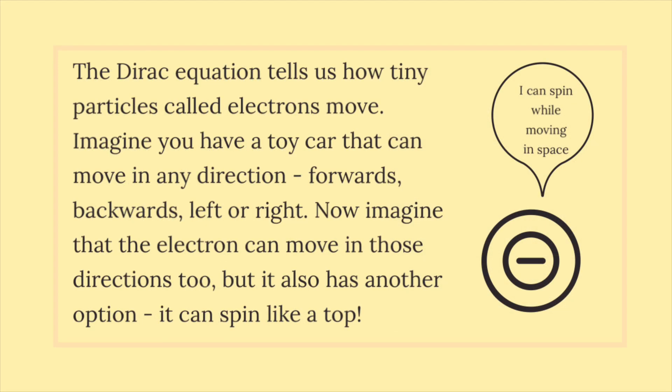The Dirac equation tells us how tiny particles called electrons move. Imagine you have a toy car that can move in any direction: forwards, backwards, left or right. Now imagine that the electron can move in those directions too, but it also has another option. It can spin like a top.